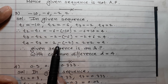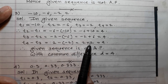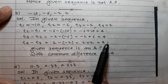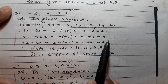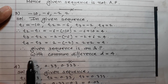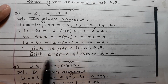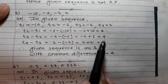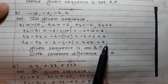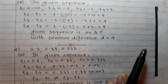t3 - t2 = -2 - (-6) = 4, and t4 - t3 = 2 - (-2) = 2 + 2 = 4. All differences are equal, and hence the given sequence is an AP with common difference d = 4.